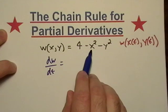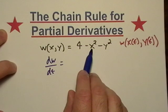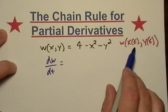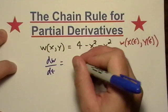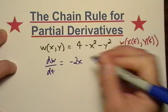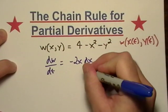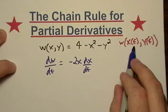I get to my x term, and x is actually a dependent variable on t now, so I'm going to take its derivative.